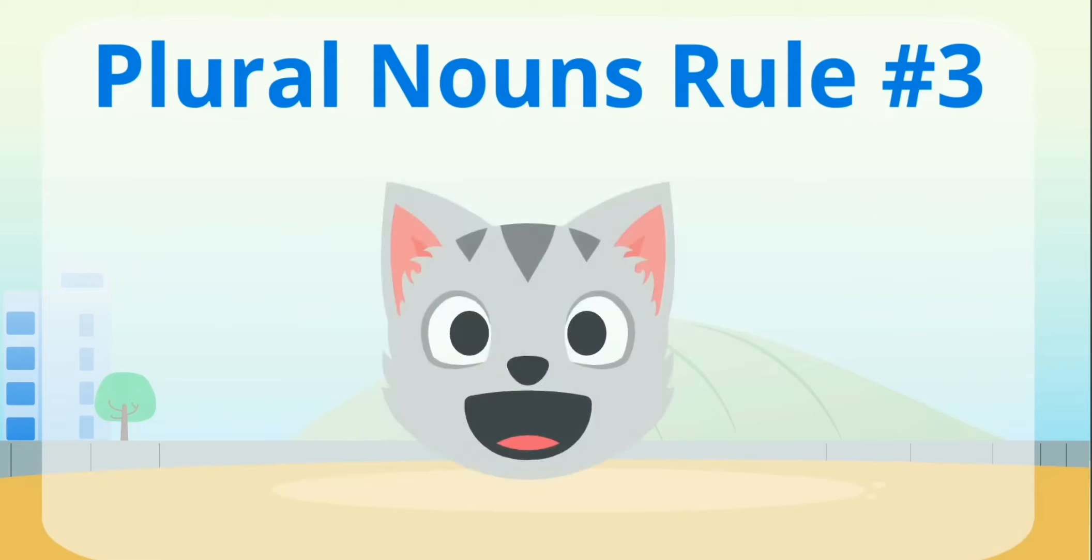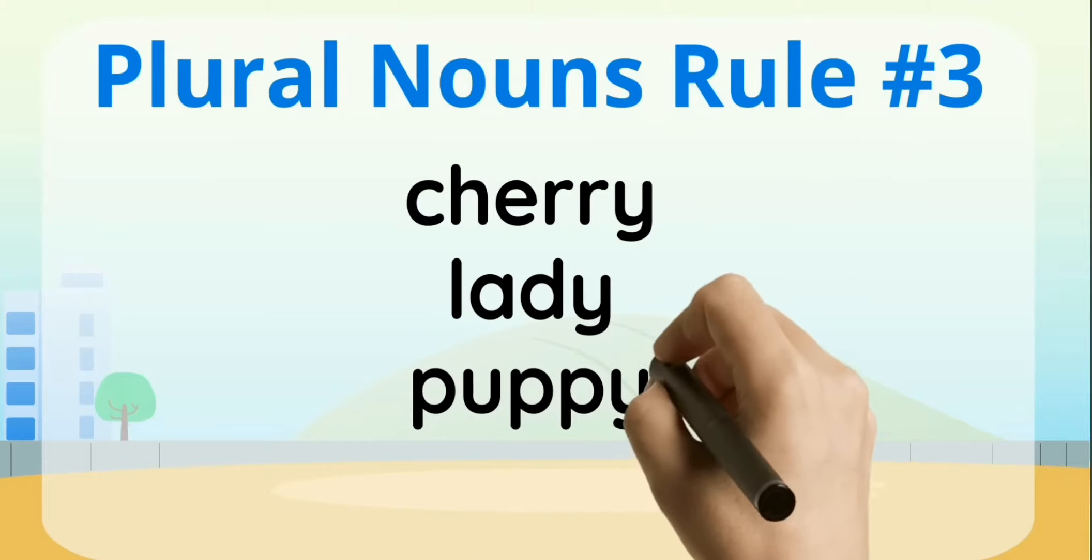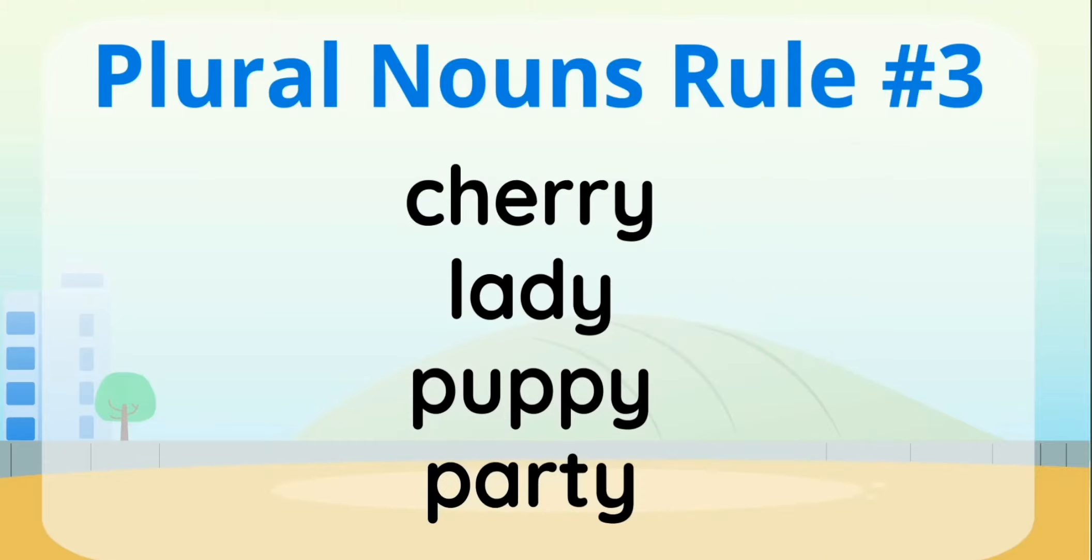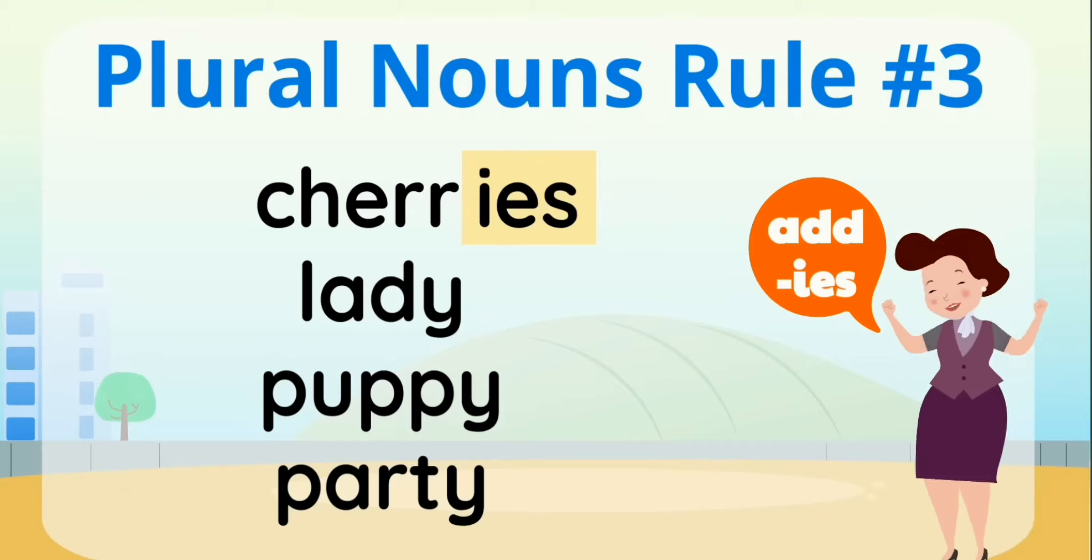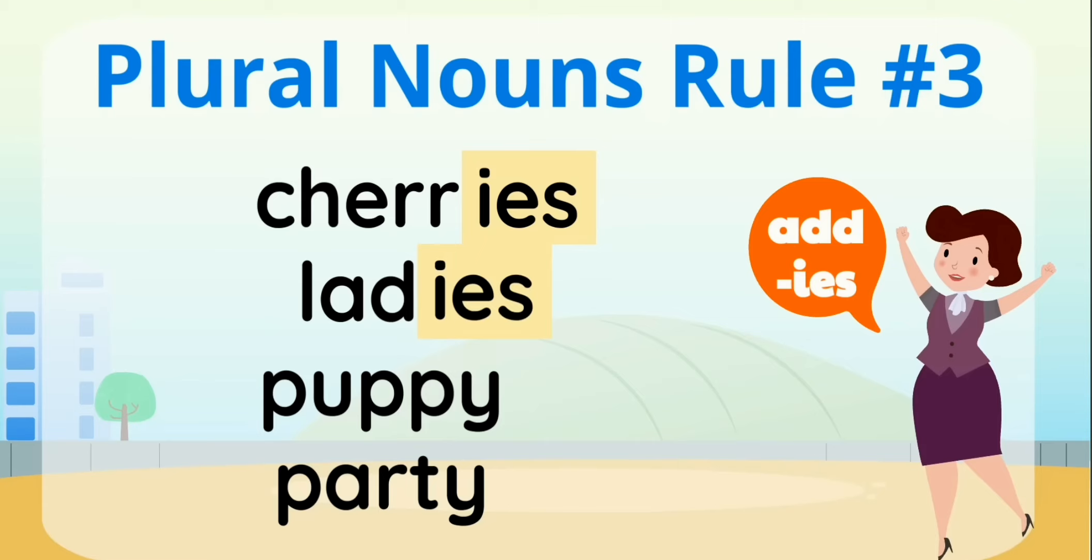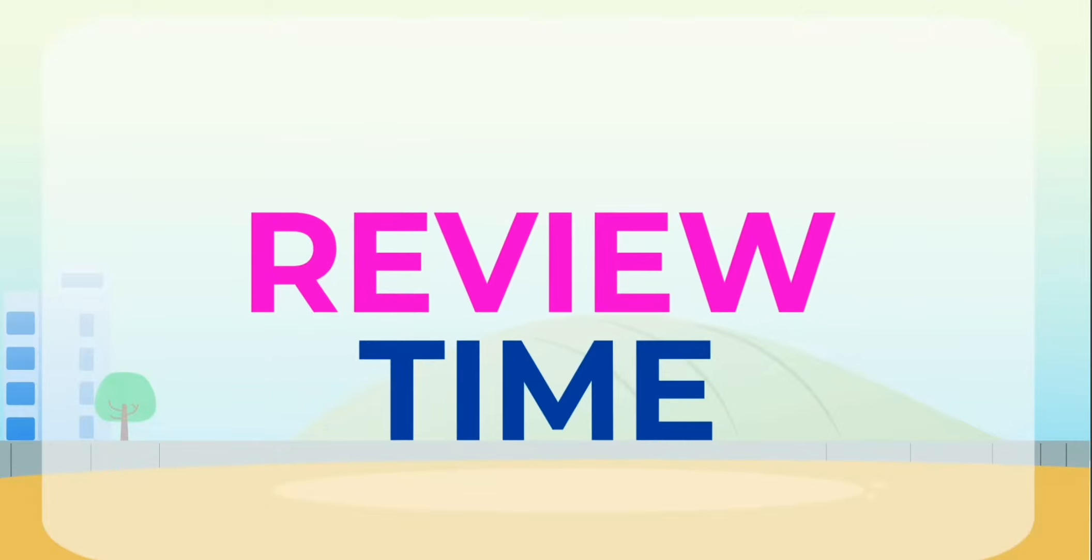Change these singular nouns to plural nouns by dropping the y and adding ies. Cherry, lady, puppy, party. Are you ready to make them plural? Right, let's do it! Cherry, drop the y and add ies. Lady, drop the y and add ies. Puppy, drop the y and add ies. Party, drop the y and add ies. There! We did it! Good job!